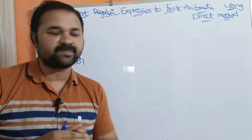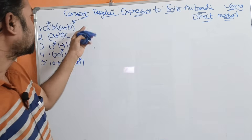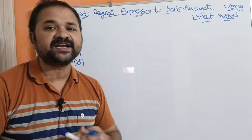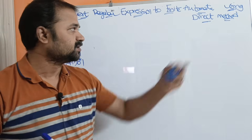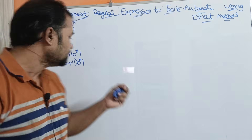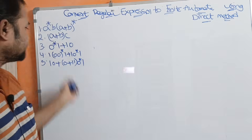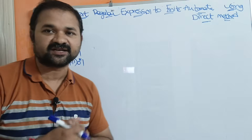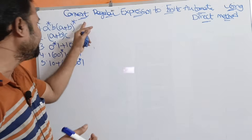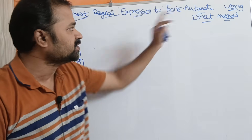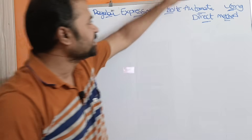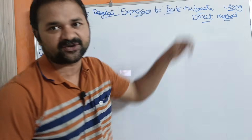Let us discuss converting regular expressions to finite automata using the direct method. Totally five examples are given, and we have to convert these five regular expressions into finite automata using the direct method.